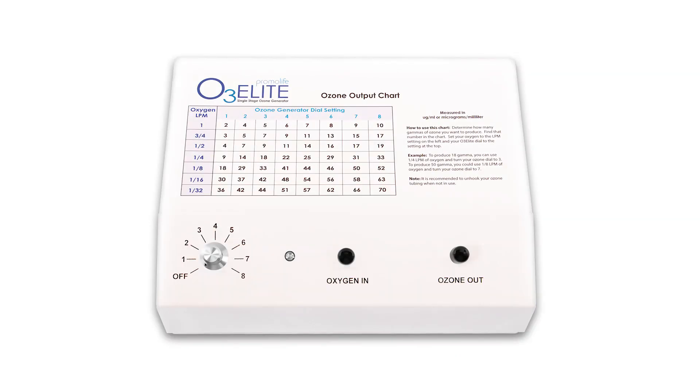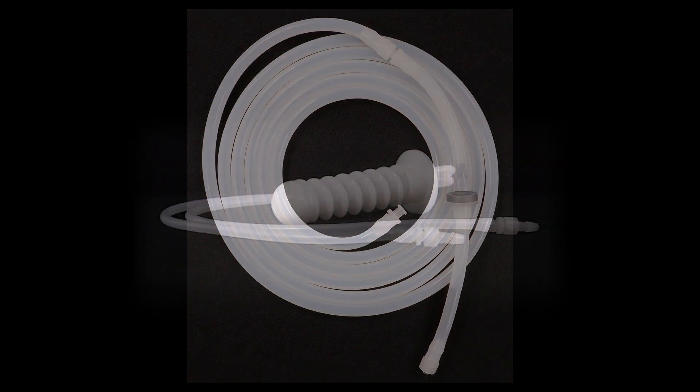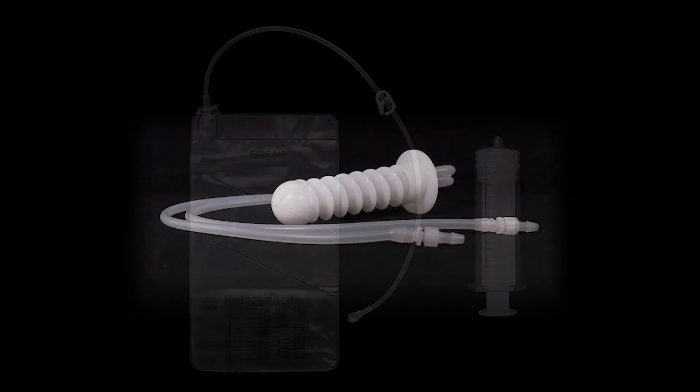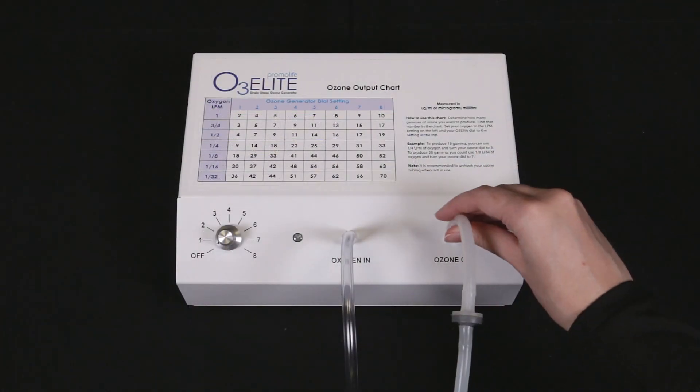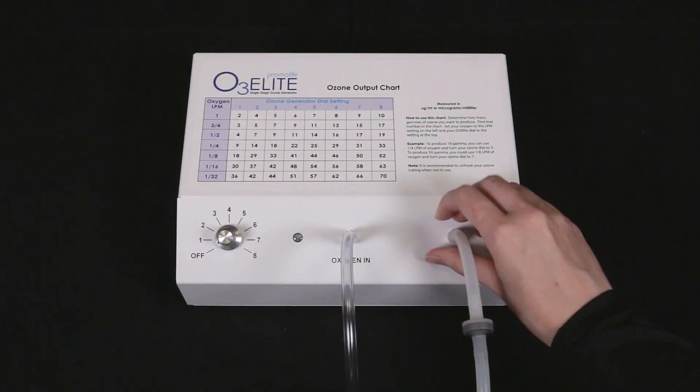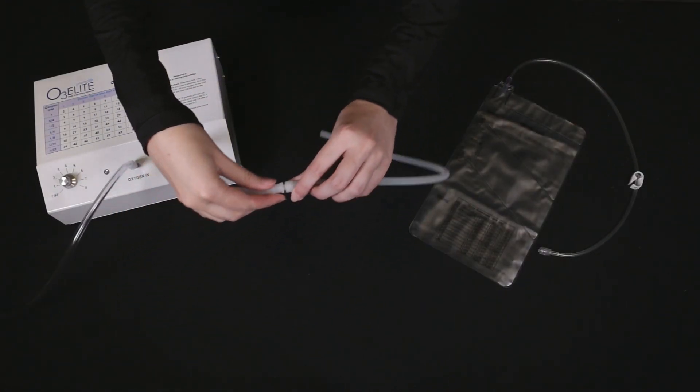To begin, first make sure you have all the accessories needed. Those include an O3Elite single ozone generator, tubing with a check valve attached to 5 feet of silicone tubing, a vaginal insufflation kit, and an insufflation bag or ozone syringe. First, you will need to connect the tubing with the check valve to the ozone outport on your ozone generator and make sure you detach the 5 feet of silicone tubing.